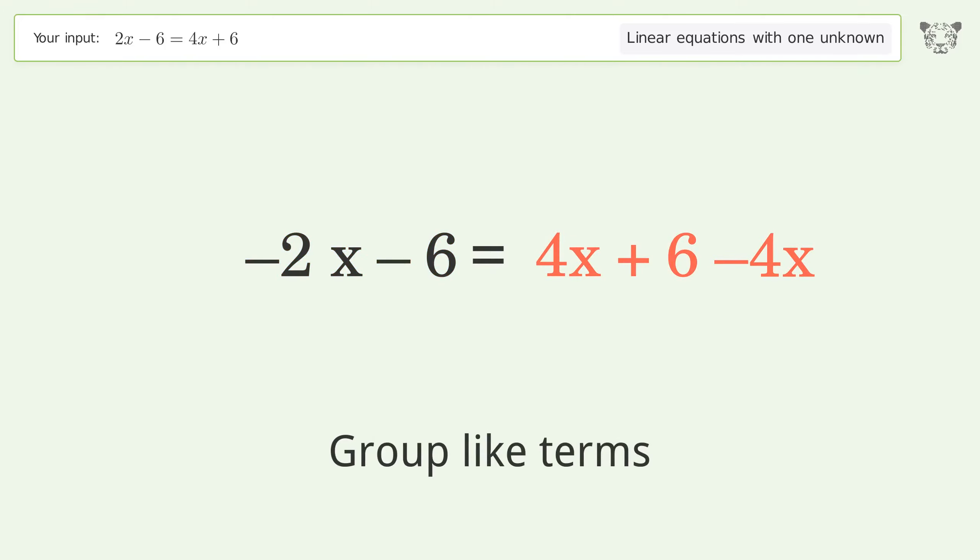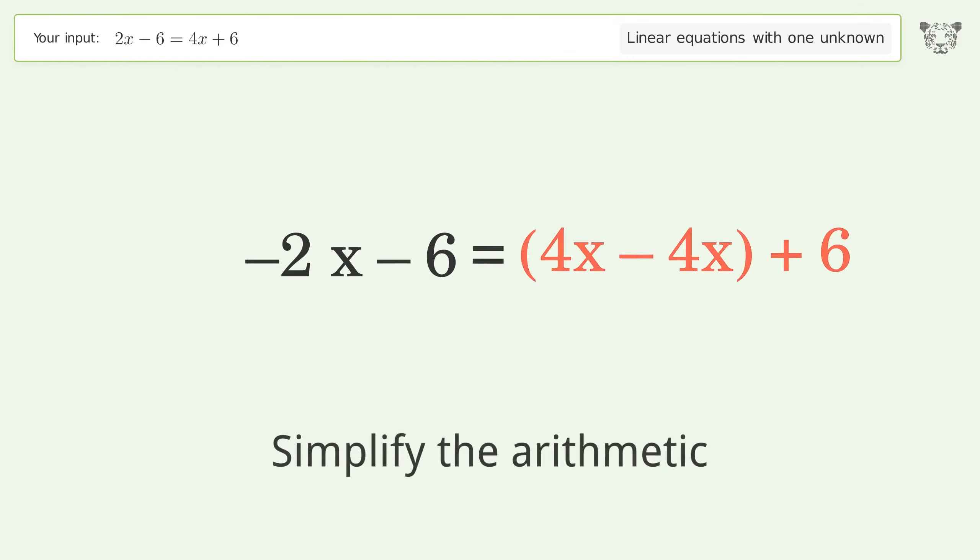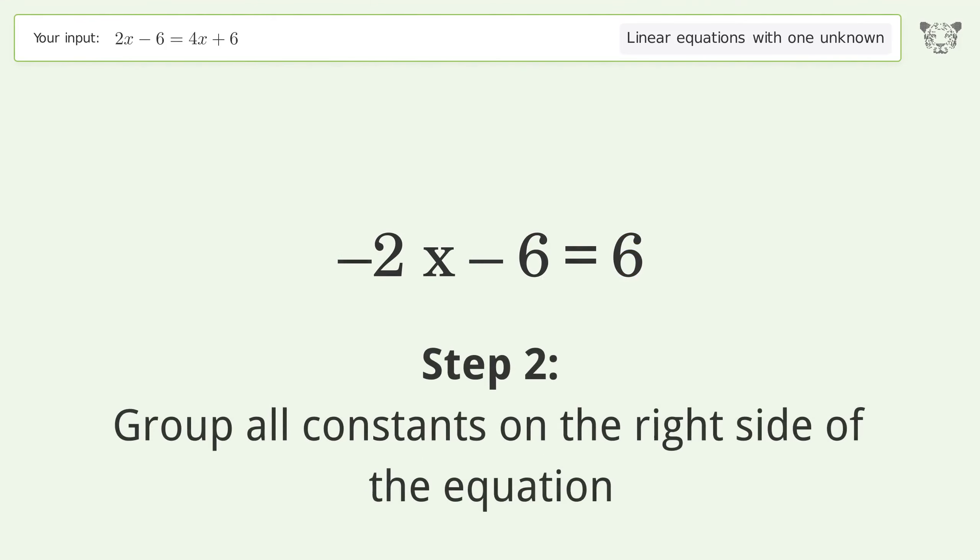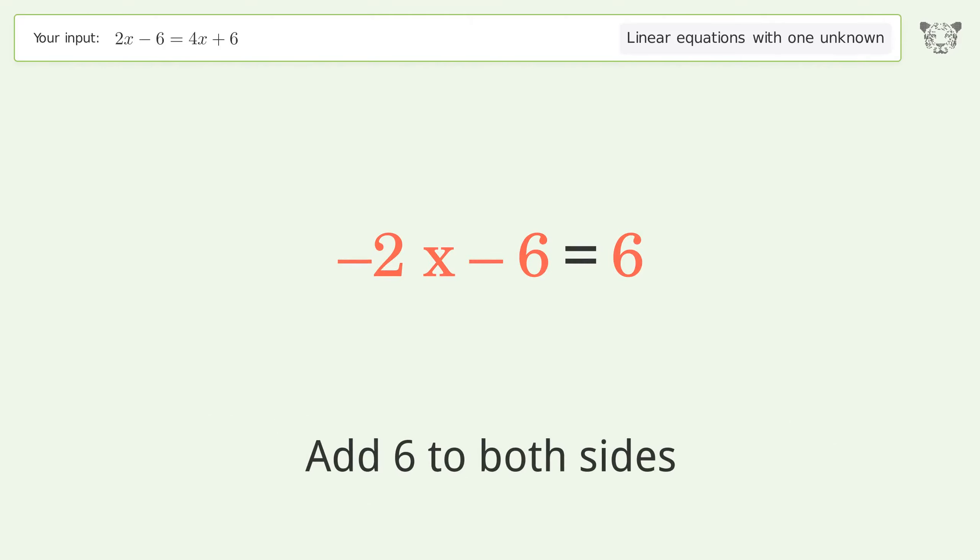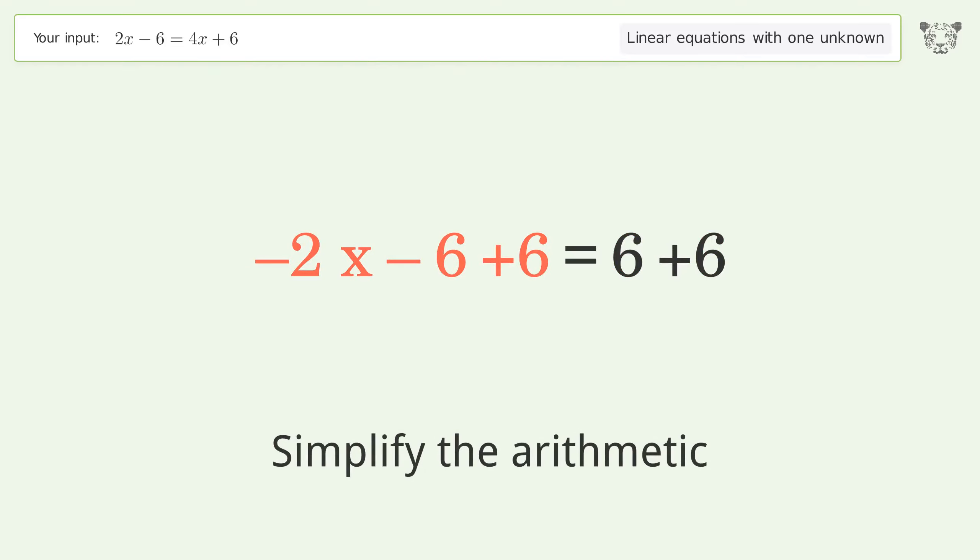Group like terms. Simplify the arithmetic. Group all constants on the right side of the equation. Add 6 to both sides. Simplify the arithmetic.